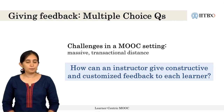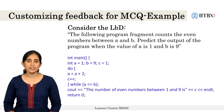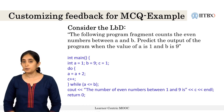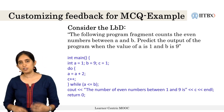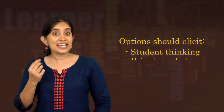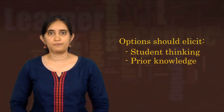Let us discuss this with an example of a multiple choice question from a programming course on the topic of iterations. The LBD reads: the following program fragment counts even numbers between A and B — predict the output of the program when the value of A is 1 and the value of B is 9. The program fragment is given and you can take a look at it. To create options, an instructor thinks of what difficulties students might face or what common errors they may make, so that options elicit students' thinking and prior knowledge.